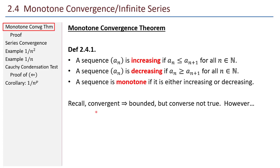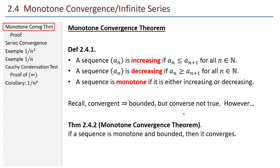Recall that if a sequence converges, then it's bounded. But the converse doesn't have to be true — you can have something that's bounded but just bounces all over the place and never actually converges. However, if the sequence is more orderly, we have the monotone convergence theorem: if a sequence is monotone and bounded, then it converges. If a sequence's terms are increasing and bounded by some number, it's sort of being forced to get very close to some limit.